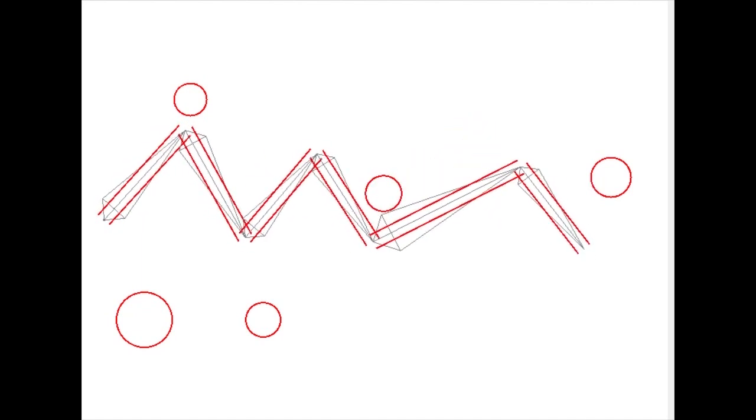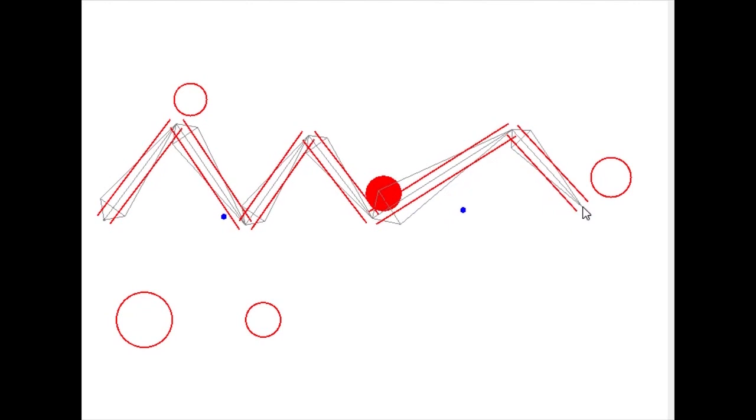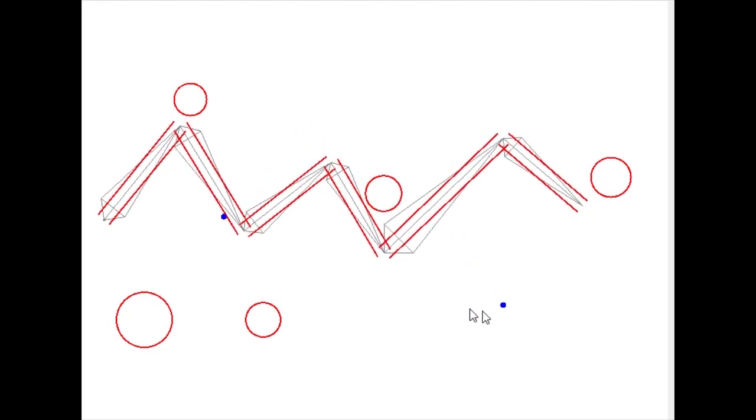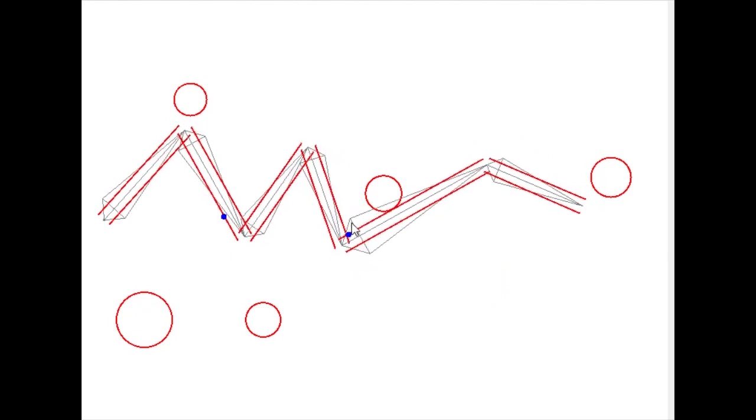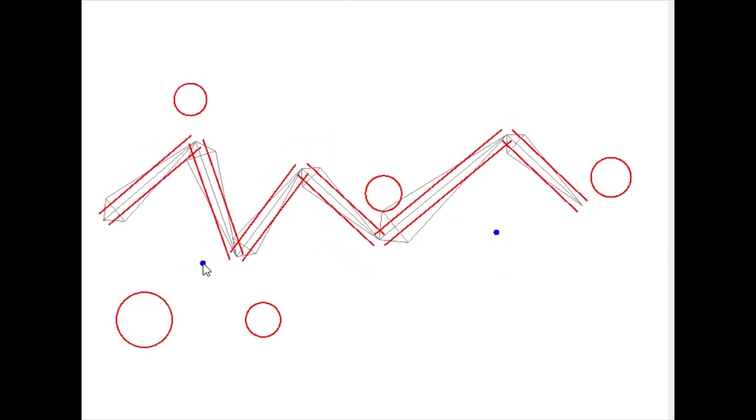The solution that I've come up with is to add some additional control to the chain of arm segments. Previously I was controlling it only with the end effector. Now I have added two additional control points that can be used to organically modify the position of the arm segments to avoid collision situations.